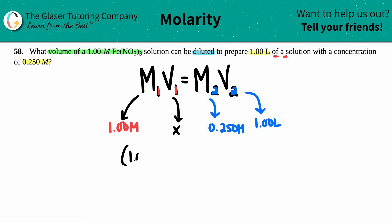So I have 1.00 times X equals 0.250 times 1.00. You can keep the units in here, but I just take them out because I know that I'm solving for a volume. Okay, and simplify. I mean, all we have to do is just divide by 1.00, but anything divided by 1 is the same number, right?